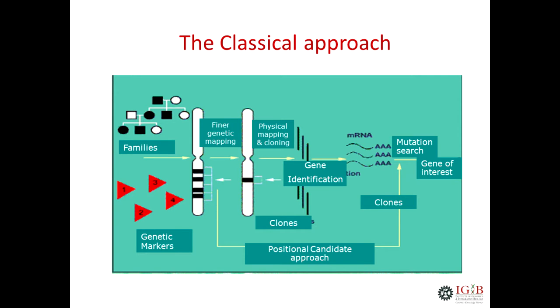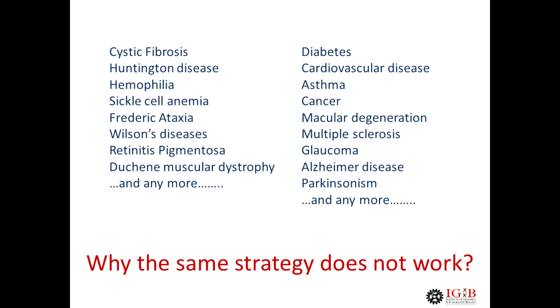That is the way by which most of the diseases we know today in the textbooks have had their genes identified. Somehow the same strategy applied to another set of diseases we hear about most often today — like diabetes, cardiovascular disease, hypertension — and glaucoma also falls there — the same strategy doesn't seem to work. The question is why doesn't it work.